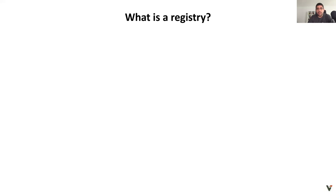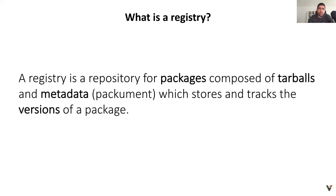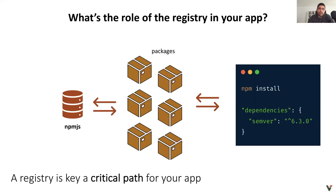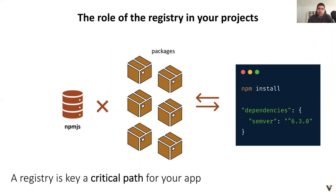So what is a registry and why should we care about it? A simple definition is: a repository of packages composed of tarballs and metadata, also known as manifest, which stores and tracks the version of the package. The package manager needs information to calculate the dependencies in your project — this information comes from the registry. Without a registry, the package manager doesn't have much to do by itself, so the registry must have high reliability, otherwise you are totally blocked.